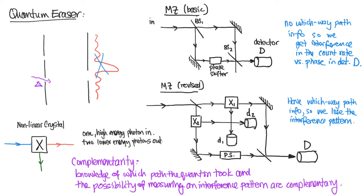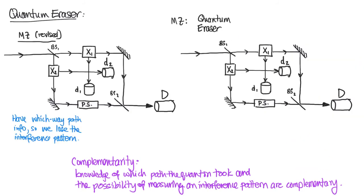Now the key idea here is although we have which way path information in this experiment we should be able to re-scramble that information so that which way path information is actually lost and that should recover the interference pattern. Let's see how that shakes out.